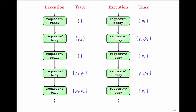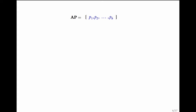Let us look at another example. For this execution, by evaluating the two atomic propositions, this is the trace that we get. Given two atomic propositions, we evaluate these atomic propositions on each state and the resulting word is called the trace. The use of these atomic propositions will become clearer during the rest of the module.